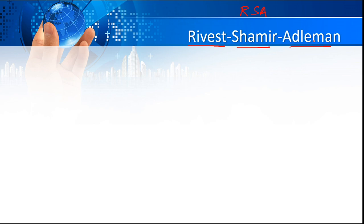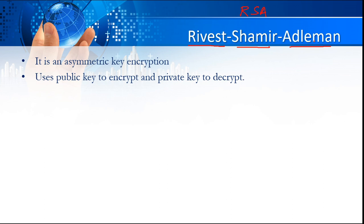The very first thing about RSA is, as I told you, it is an asymmetric key encryption. What that means is it is going to use a public key to do the encryption and a private key to do the decryption process.